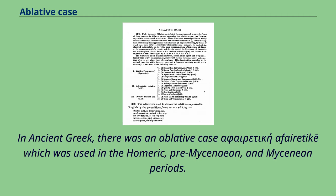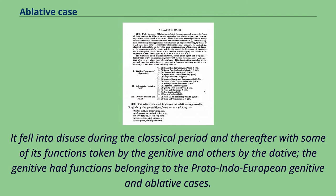In ancient Greek, there was an ablative case (aphairetikē) which was used in the Homeric, pre-Mycenaean, and Mycenaean periods. It fell into disuse during the classical period and thereafter, with some of its functions taken by the genitive and others by the dative. The genitive had functions belonging to the Proto-Indo-European genitive and ablative cases.